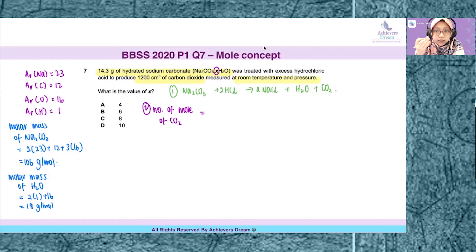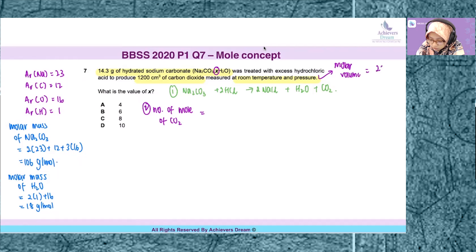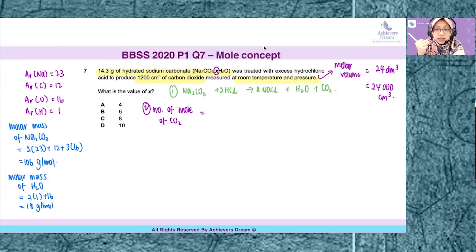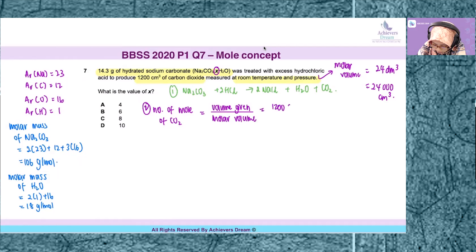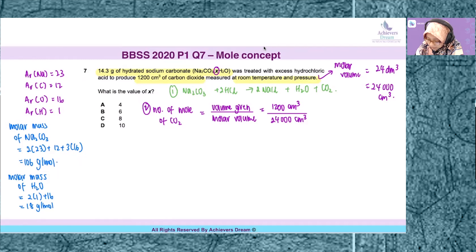When the volume of a gas is given and the question states it is measured at room temperature and pressure, you need to remember the magic number — the molar volume — which is 24 dm³, which is also equal to 24,000 cm³. To find the number of moles of CO2, we take the volume given divided by molar volume: 1200 cm³ divided by 24,000 cm³, giving us 0.05 moles.